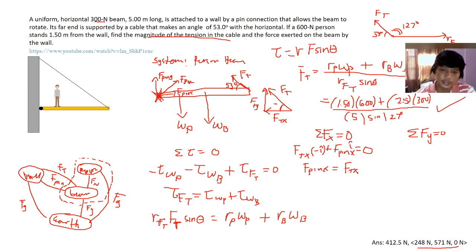And this angle is 50 degrees. We know, and you have to review your SOCATOA, that f t x is just f t cosine of 53. And that should get us, our f t is 412.5 times cosine 53. That should get us 248. I got the correct answer.